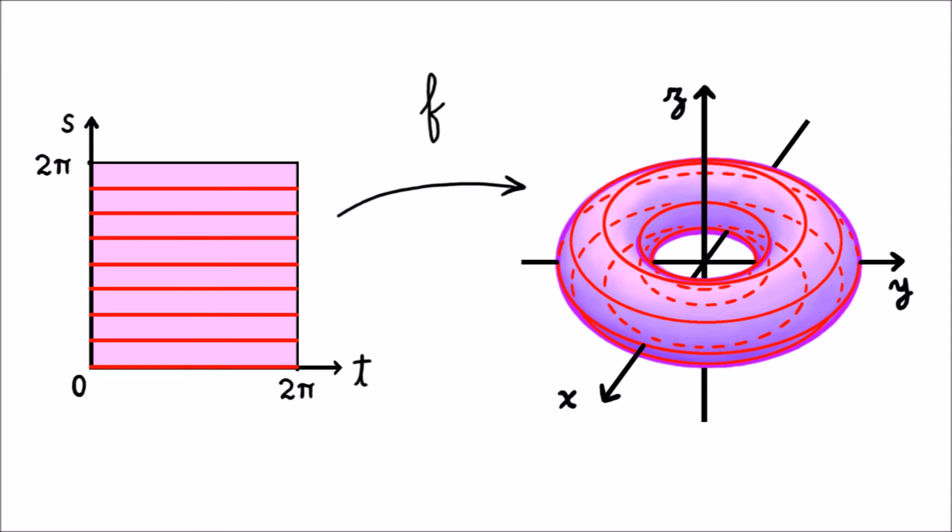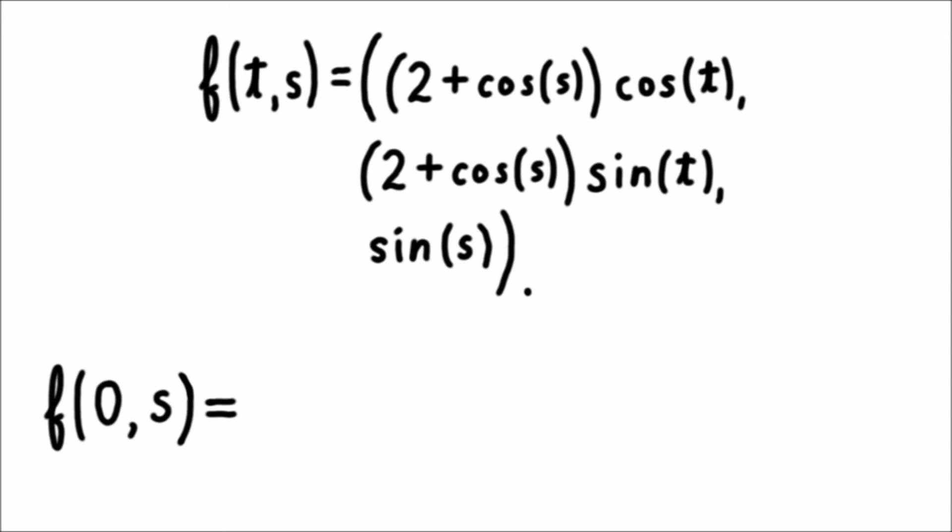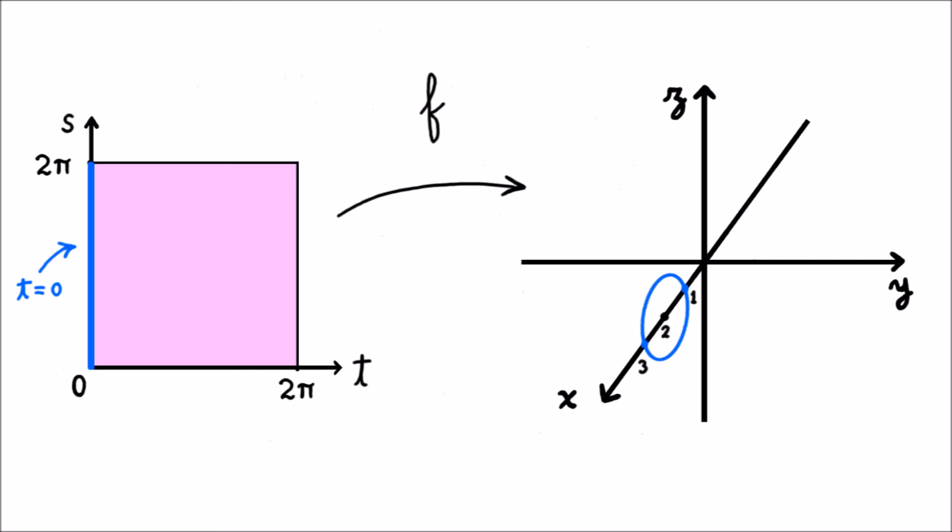Now let's look at a vertical line instead. If we set t equal to 0, the function becomes (2 + cos s, 0, sin s). This is a circle in the xz-plane with radius 1 centered at the point (2, 0, 0). This circle curves through the hole in the torus.